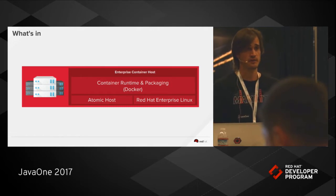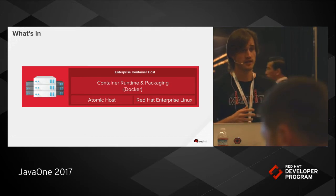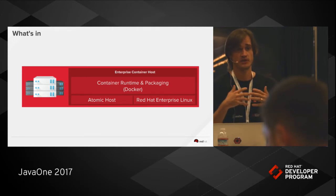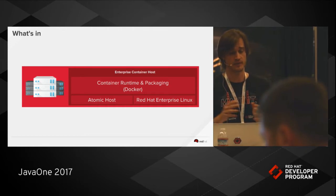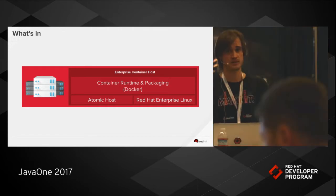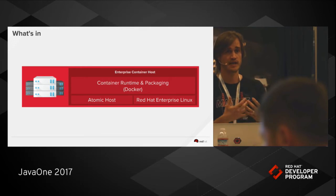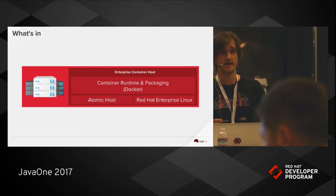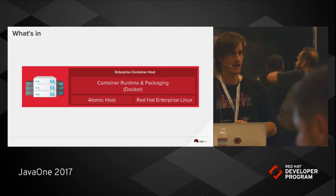Everything that you do in OpenShift runs inside a container. You don't have to necessarily create the container yourself — sometimes the platform does it for you. In OpenShift, we have two options to run your containers: the first option is Atomic Host, a very lightweight operating system, about 200 megs on disk. The other option is the traditional Red Hat Enterprise Linux that you all know and love.